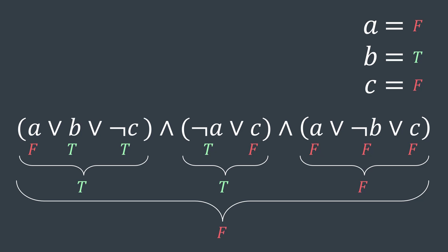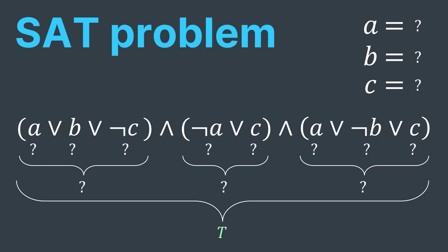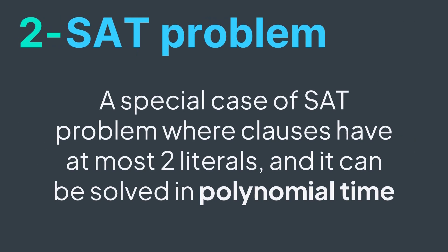Now the problem is: can we find a combination of values to assign to the boolean variables that satisfies a given formula? This is known as the satisfiability problem, or SAT problem. The general form of the problem is NP-complete — we don't know any polynomial time algorithm capable of solving it. But an exception is the case where clauses have at most two literals. This problem is called the 2-SAT problem, and today we will learn a way to solve it in polynomial time.